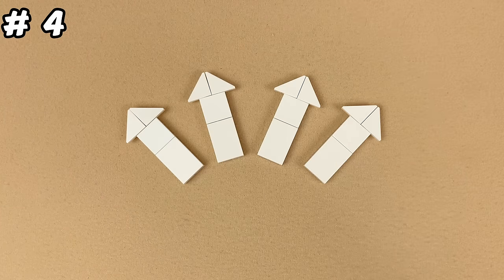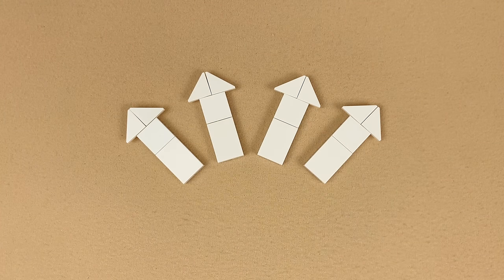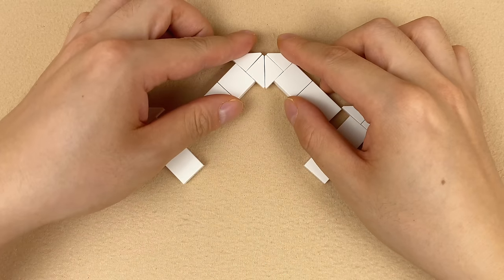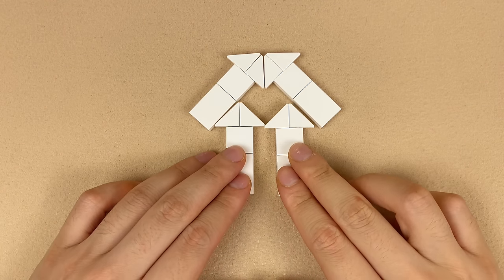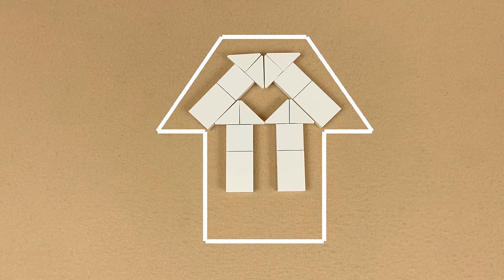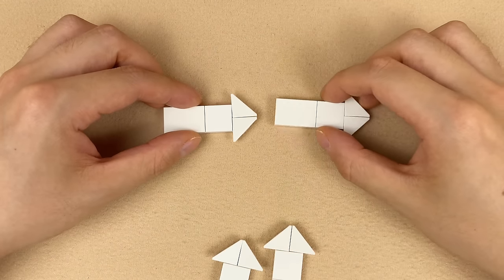This puzzle is called the missing arrow. There are four arrows, but the goal is to make five arrows. First, you'll probably try to combine these four to make a bigger one, but it's not quite the correct shape. So how do we do it?